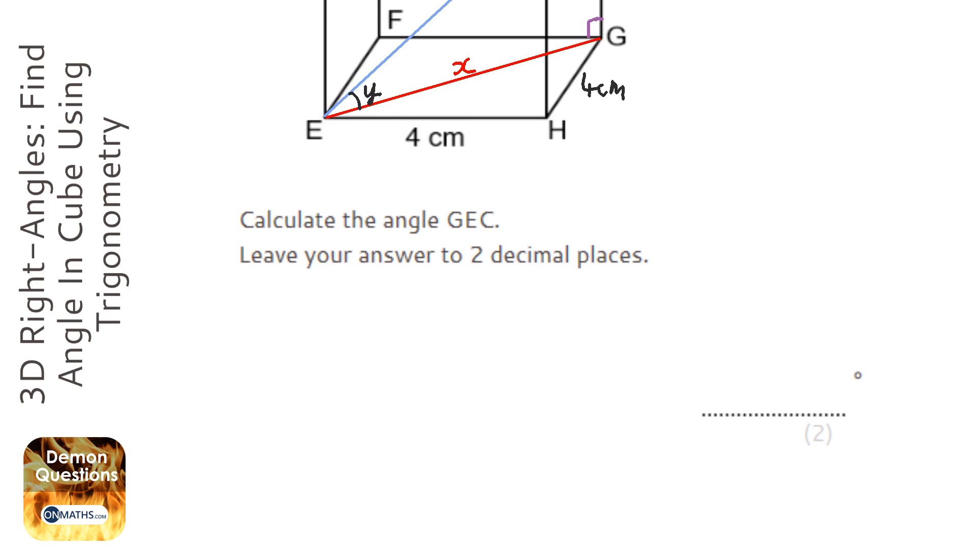I'm going to draw out the two right angle triangles we're using for this question. First of all, we're using E, G, H, the one flat, which is 4cm there, 4cm there, and a right angle there. We call this x.